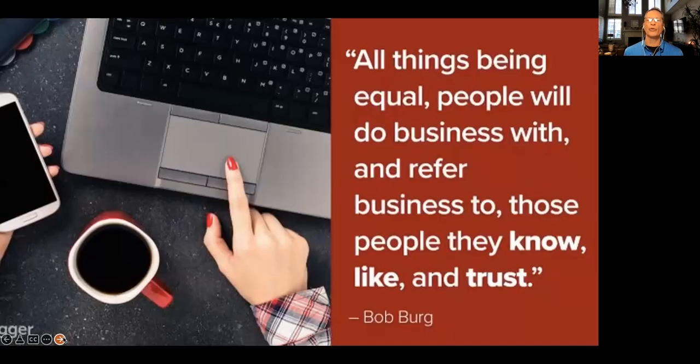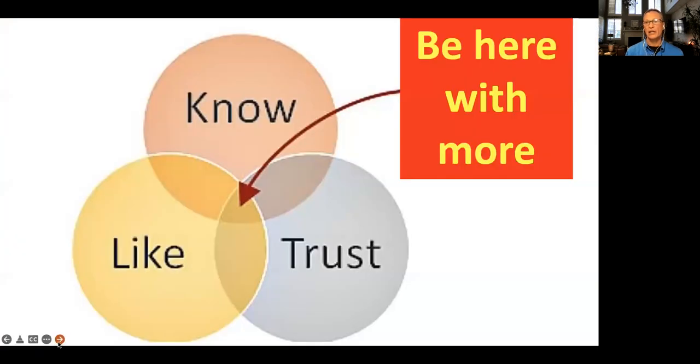I love Bob Berg. He wrote the book, The Go-Giver and many others. And he says, all things being equal, people will do business with people they know, like, and trust. Now think about that. It's not equal. We have better products, better service at a better price, more tasty, more convenient, but still we want to be that person that people know, like, and trust. It's not really who you know, it's who knows you, who likes you, who trusts you. The more of that we have going on, the more effective network that we can build.